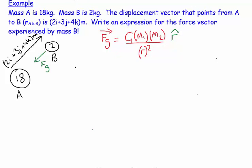So then we can just do it. We go FG vector is equal to big G. Let's leave it as big G. and this is 18. This is 2.